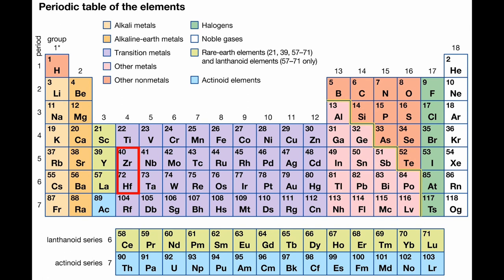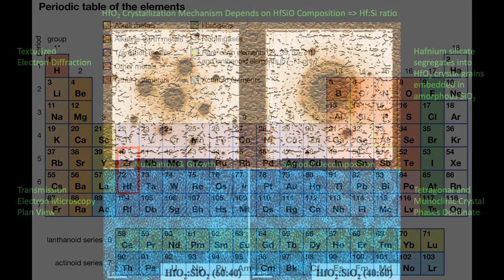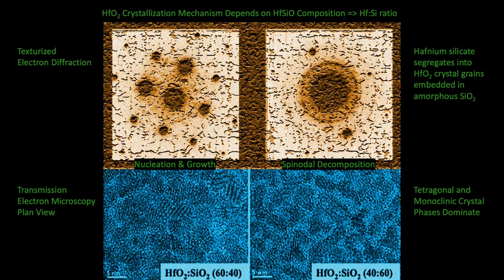So here we just locate where the zirconium and hafnium transition metals are in the periodic table. The lower images here, instead of using light as in a typical photograph, we use electrons that travel through the sample and project a focused and magnified atomic resolution picture to a photographic plate. Could we mix hafnium oxide with silicon oxide and keep it amorphous? No. The material segregated into crystalline grains of hafnium oxide embedded in amorphous silicon oxide. Hafnium oxide crystallized by two different mechanisms, depending on the hafnium to silicon ratio. The upper images here I texturized. It's an electron diffraction measurement that gives us information about the crystal lattice constants and crystal defects and symmetries.